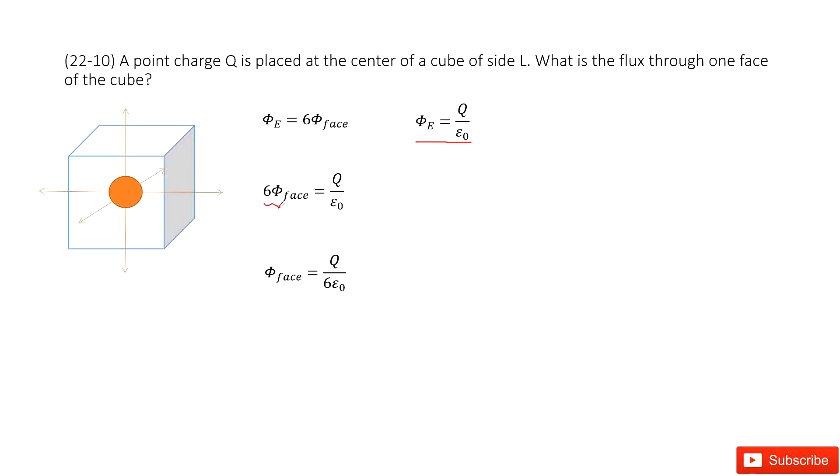So the six surfaces equal the total net electric flux, Q divided by epsilon naught. In this way, we can find the flux through one surface is Q divided by 6 epsilon naught.